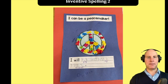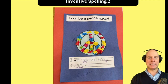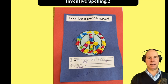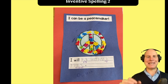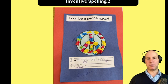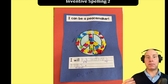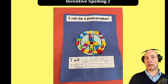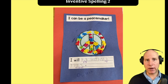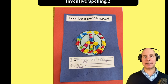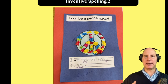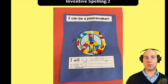Here's another example — this picture says 'I will play with my friends.' If you look at the word 'play,' all the sounds are there: p, l, a. So technically it's phonetically correct — it's not spelled correctly, but she spelled it the way that it sounds. So she invented that spelling.